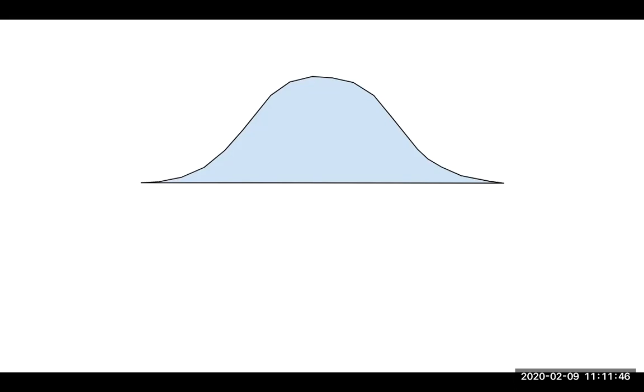So let's think about this distribution here. It should be familiar. It's that normal distribution. And so we call this the null distribution, and the word null is another word for nothing. Nothing happened.